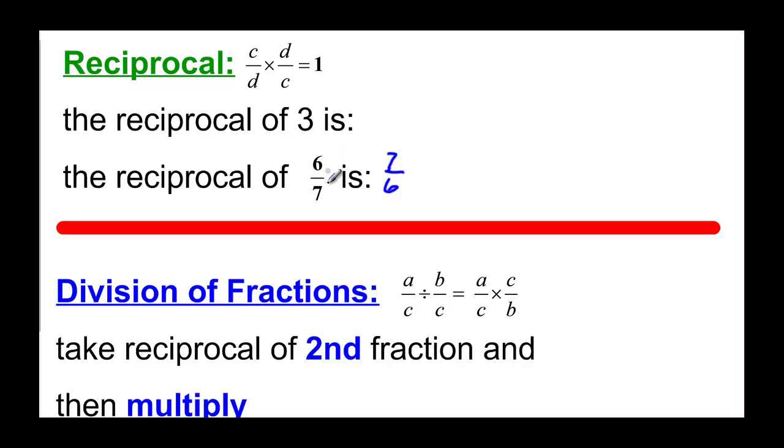7 over 6 instead of 6 over 7. Well what do you do with a whole number? Well remember that it's really 3 over 1. So the 3 goes on the bottom of my fraction and the 1 goes on top, so the reciprocal of 3 is 1 third.